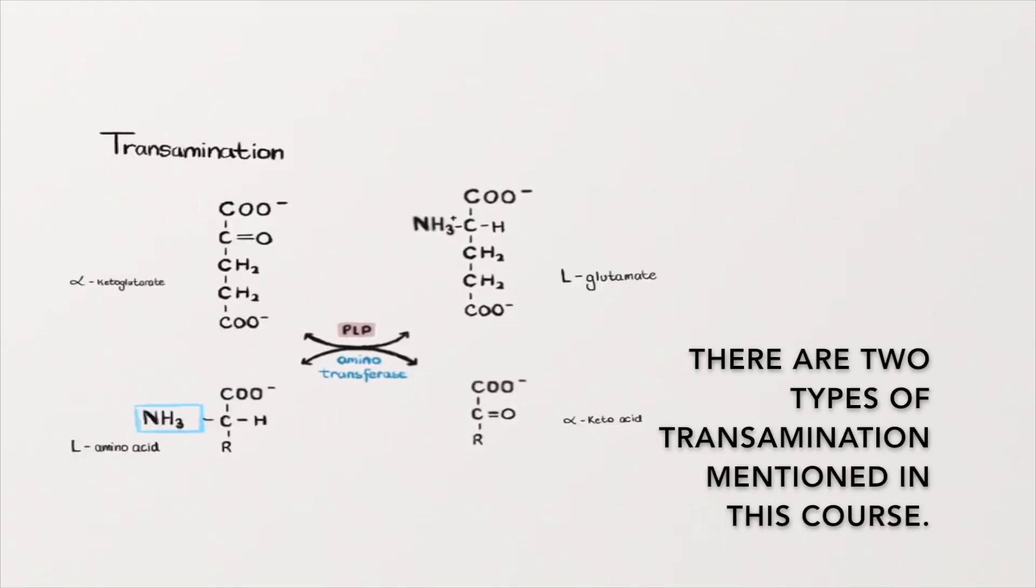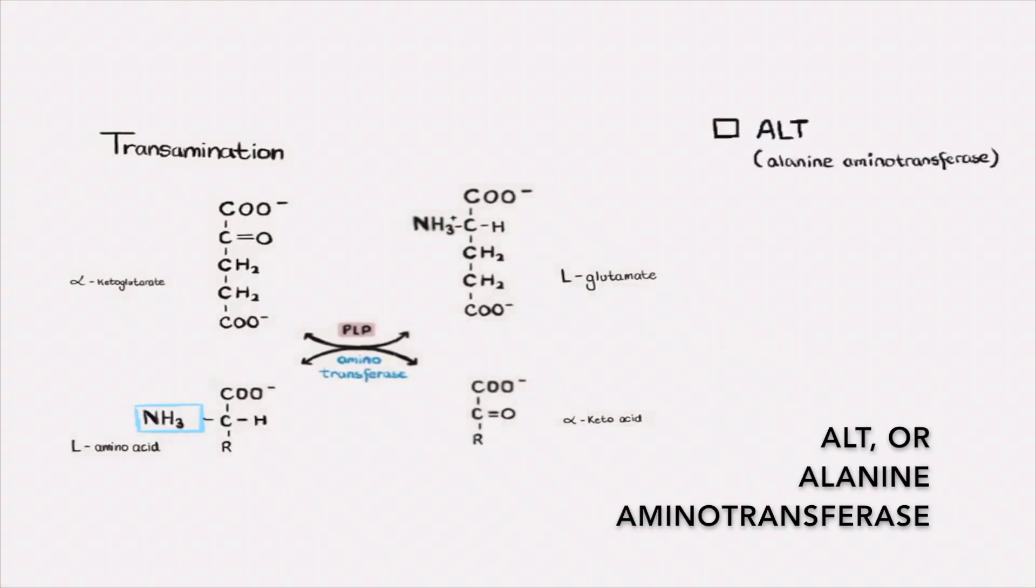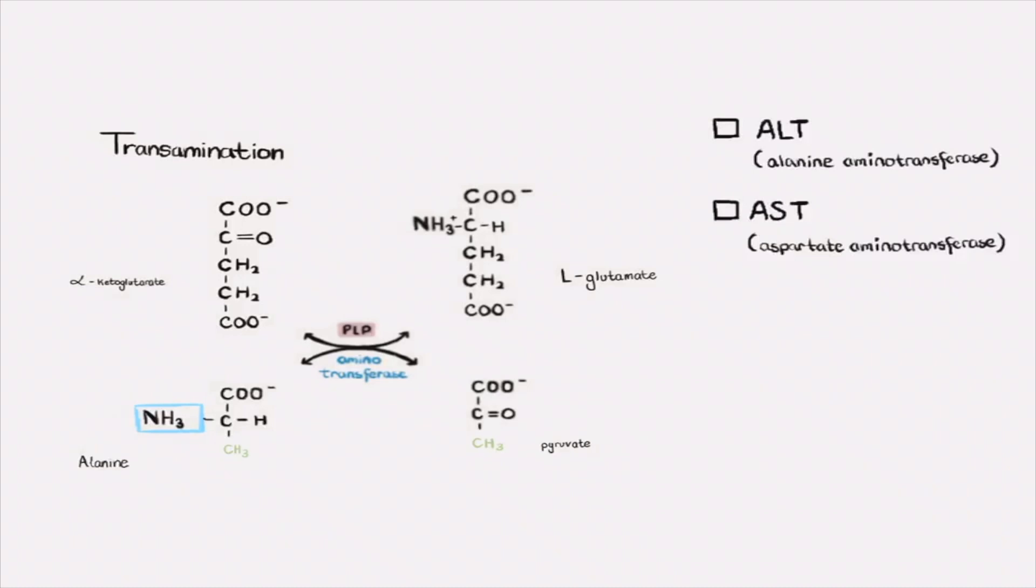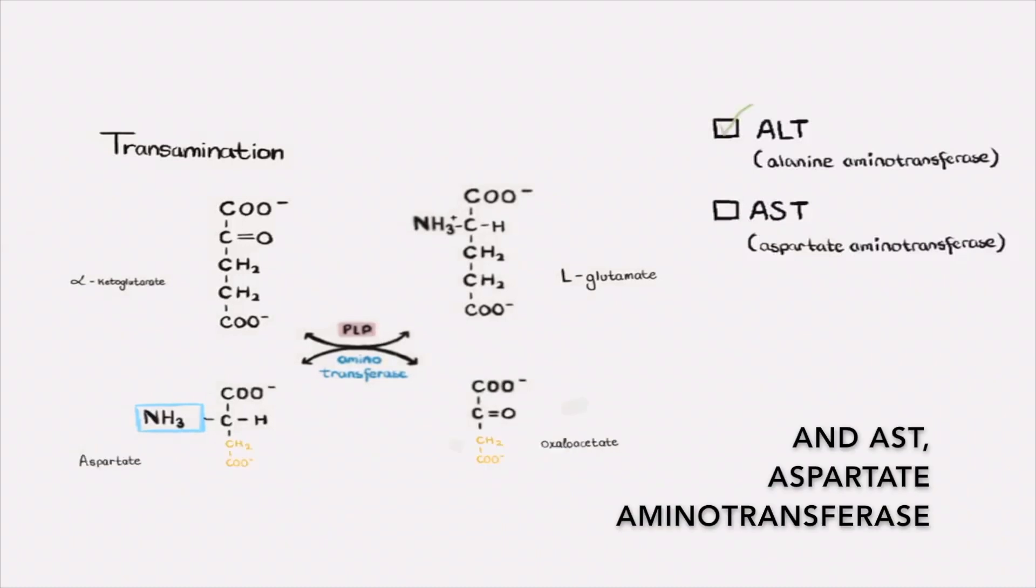There are two types of transamination mentioned in this course: ALT, or alanine aminotransferase, and AST, aspartate aminotransferase.